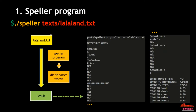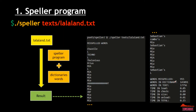For the Speller program, we're going to type dot slash speller text lalaland dot text. So the lalaland text here, our program mixed with the dictionary words. Here are the results provided: we got the misspelled words, the data of the words misspelled, number of words misspelled, the number of words in dictionary, text, and also the time for load, check, size, and unload.